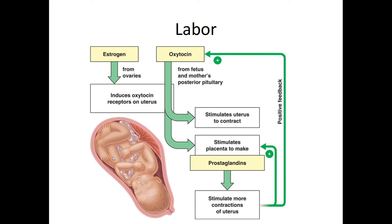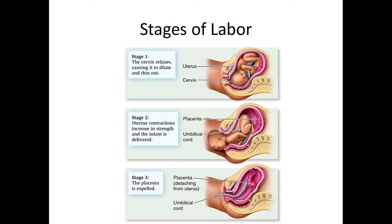Labor is divided into three stages: dilation, expulsion, and the placental stage. During dilation, the baby's head pushes against the cervix, causing it to open and thin out. During expulsion — sometimes called the pushing phase — the baby is pushed out through the open cervix. Finally, the placenta must also be expelled through final uterine contractions. If the placenta doesn't fully come out, it can cause infection and other serious problems.